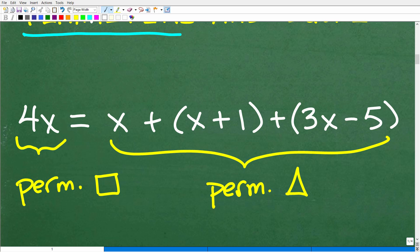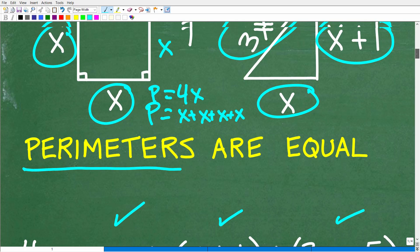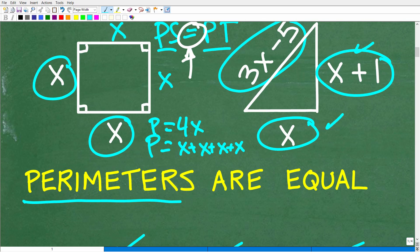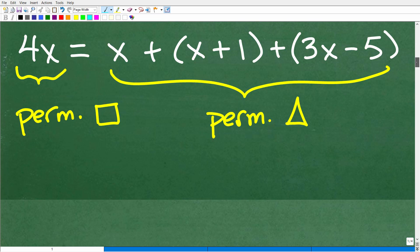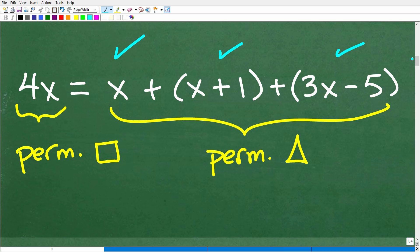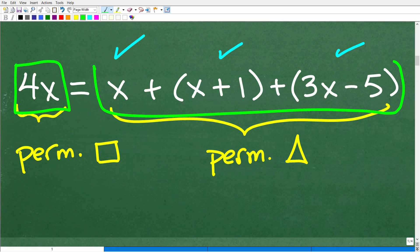The perimeter of the triangle is the sum of the three sides of the triangle. So that's x, x plus 1, and 3x minus 5. We're being told that the perimeters are equal. So we're going to set the perimeters equal to one another. And now, what are we looking at? We're looking at a lovely algebraic equation. 4x is equal to all of this. And the goal now is to solve for x.